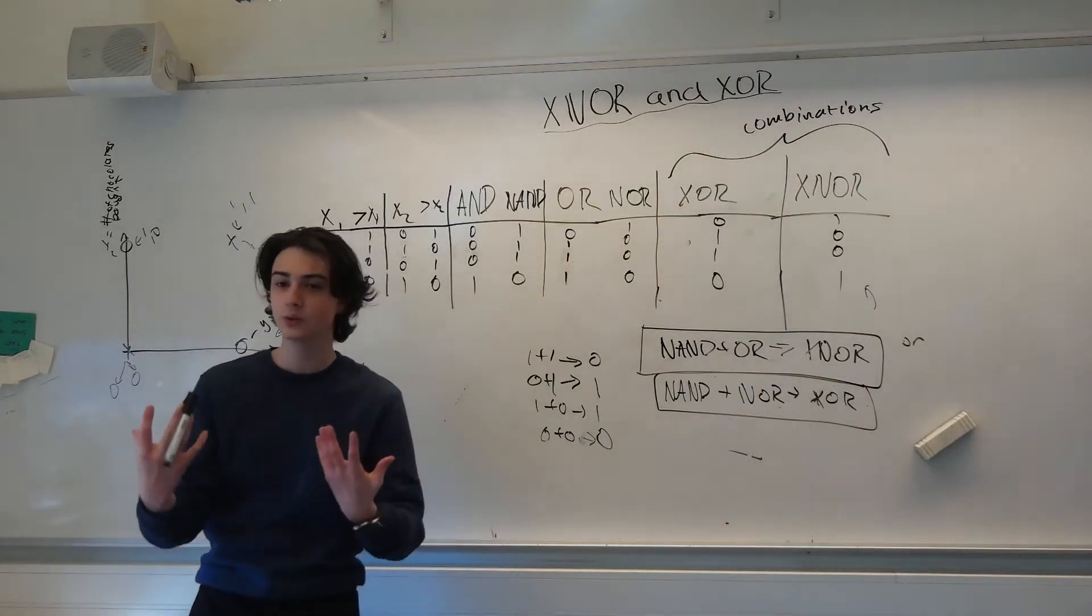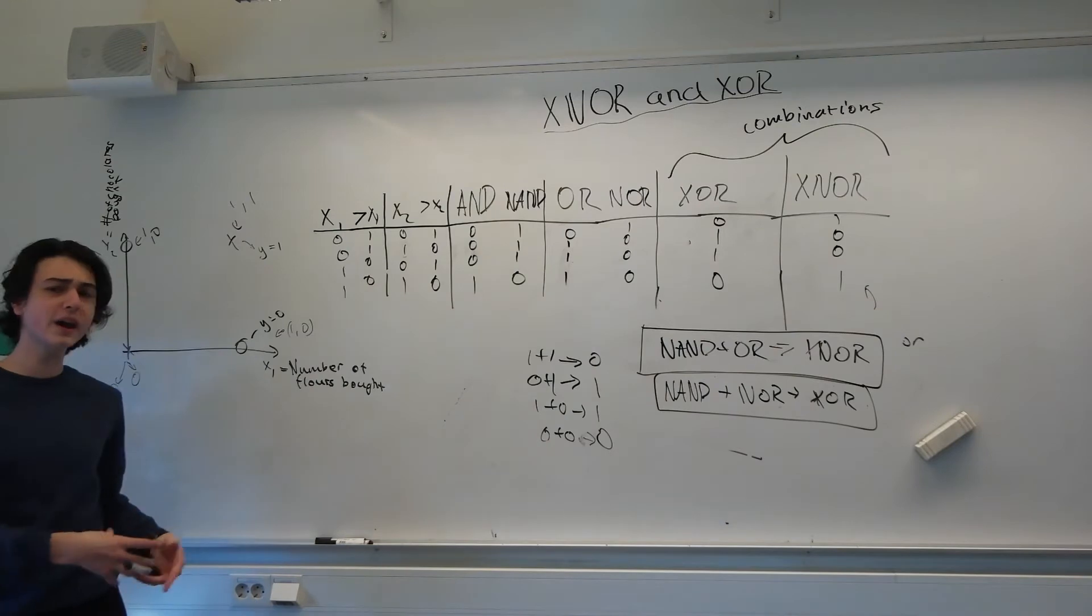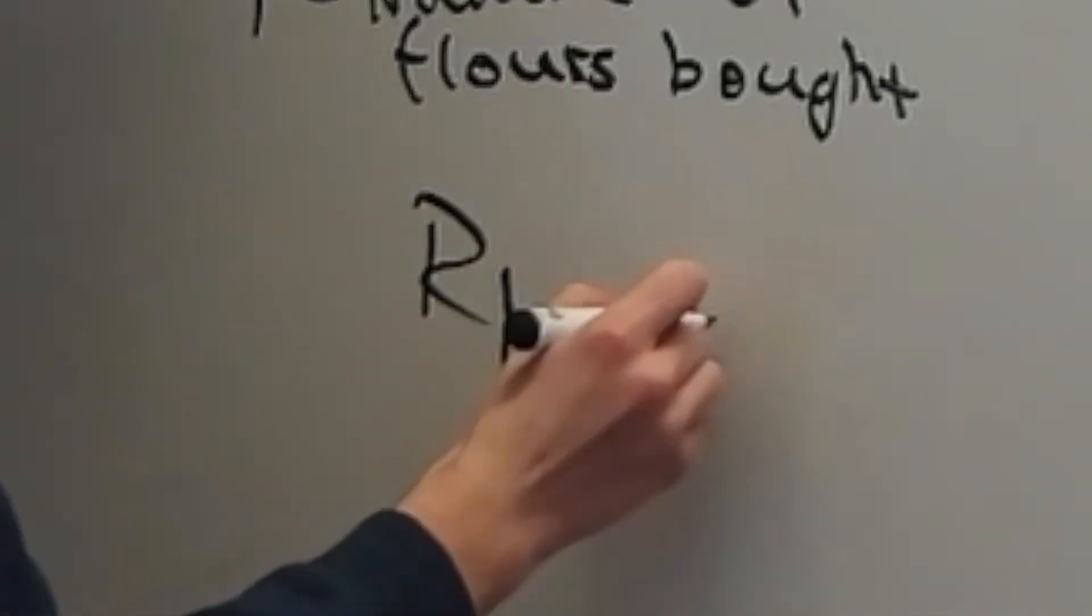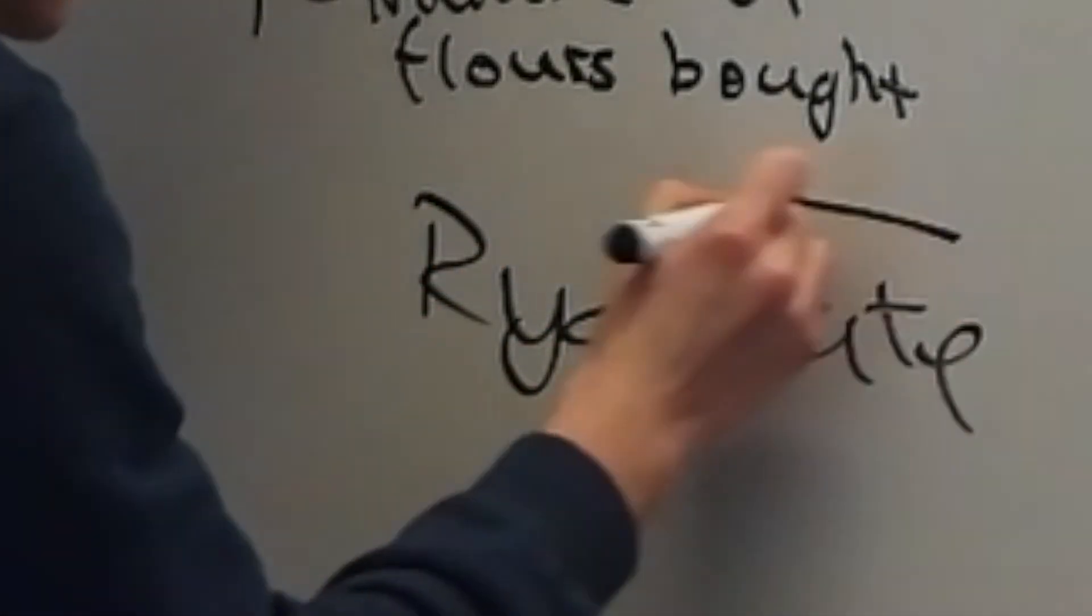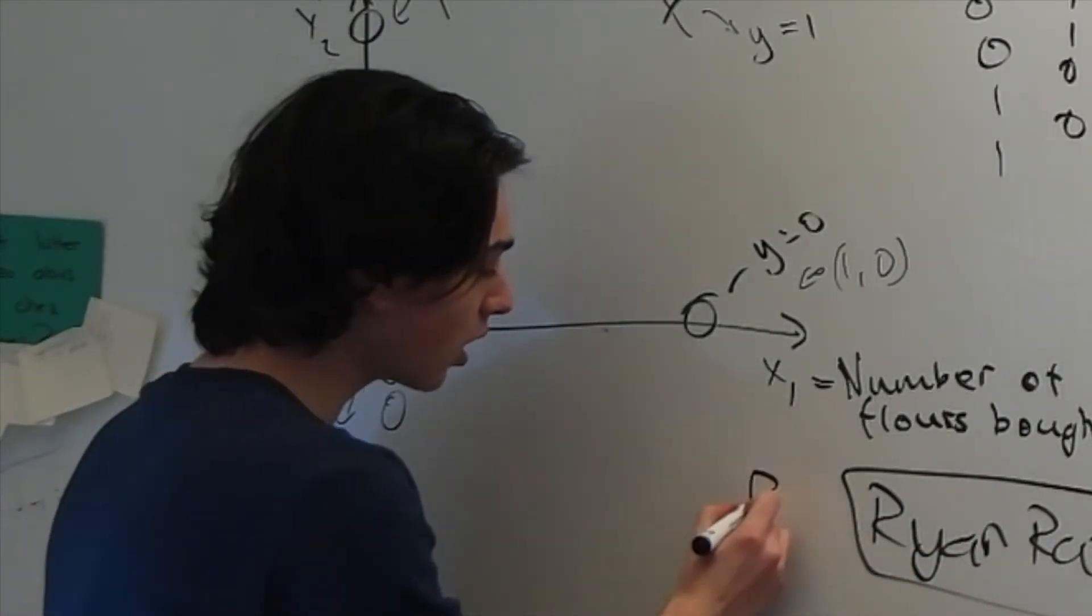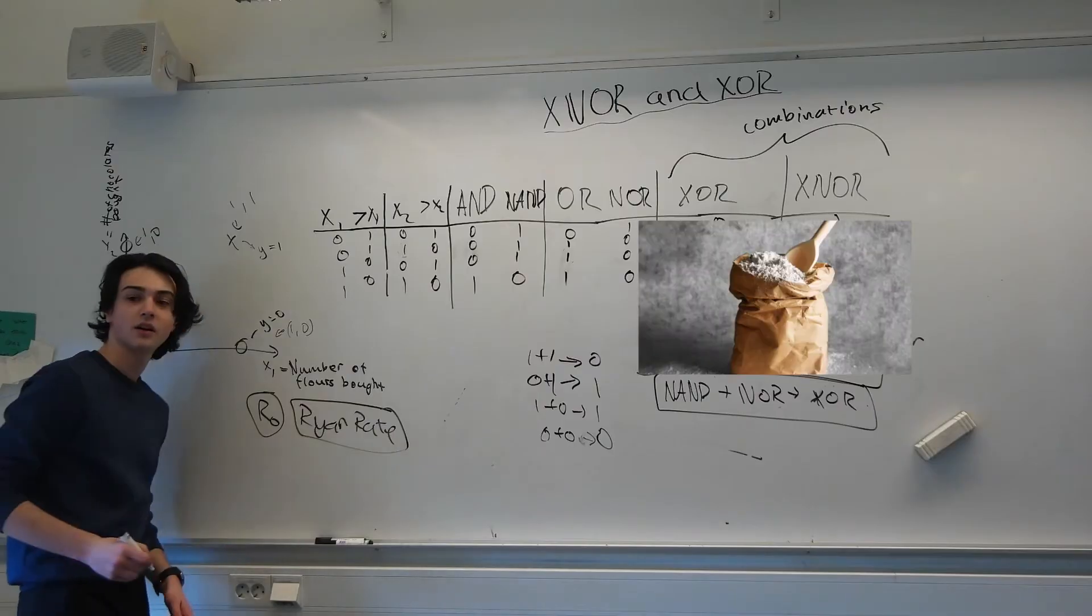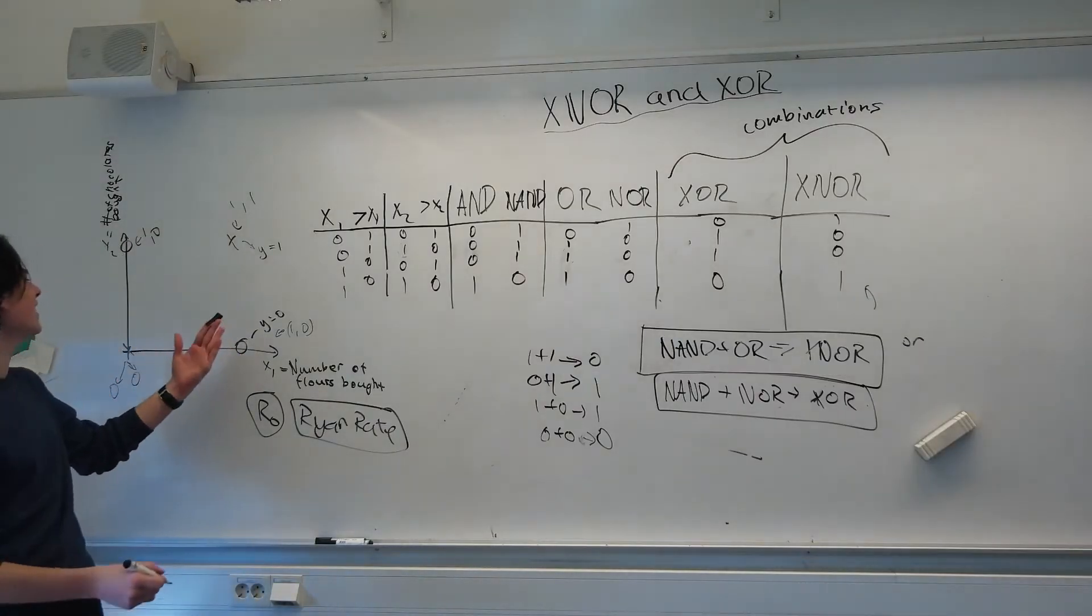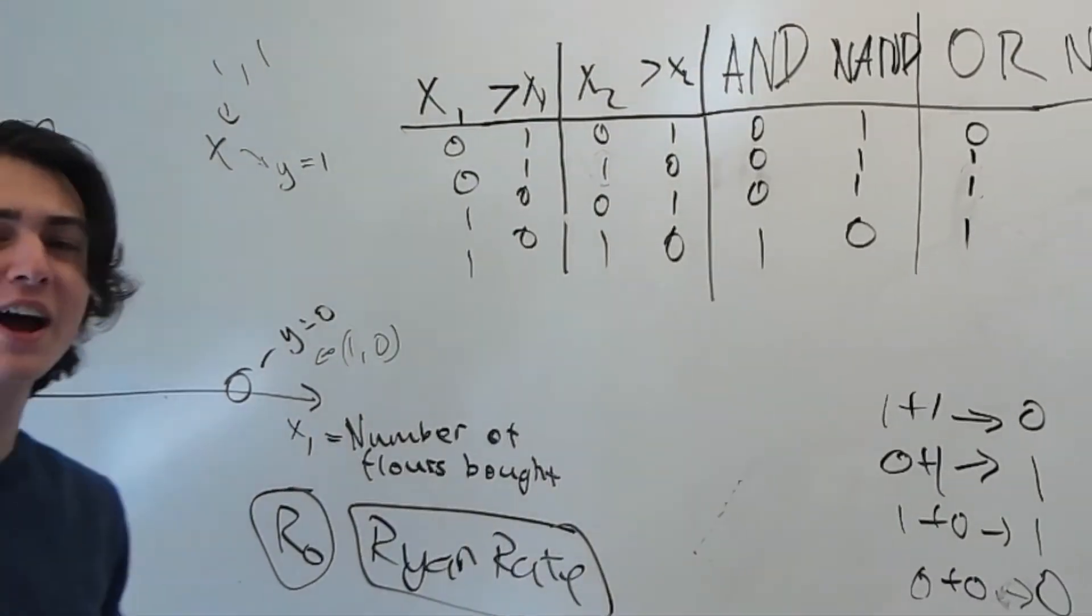We can move on to our intuition on how we can model the Ryan rate. We need to give it a name, it's going to be R naught. It means giving flour actually works.